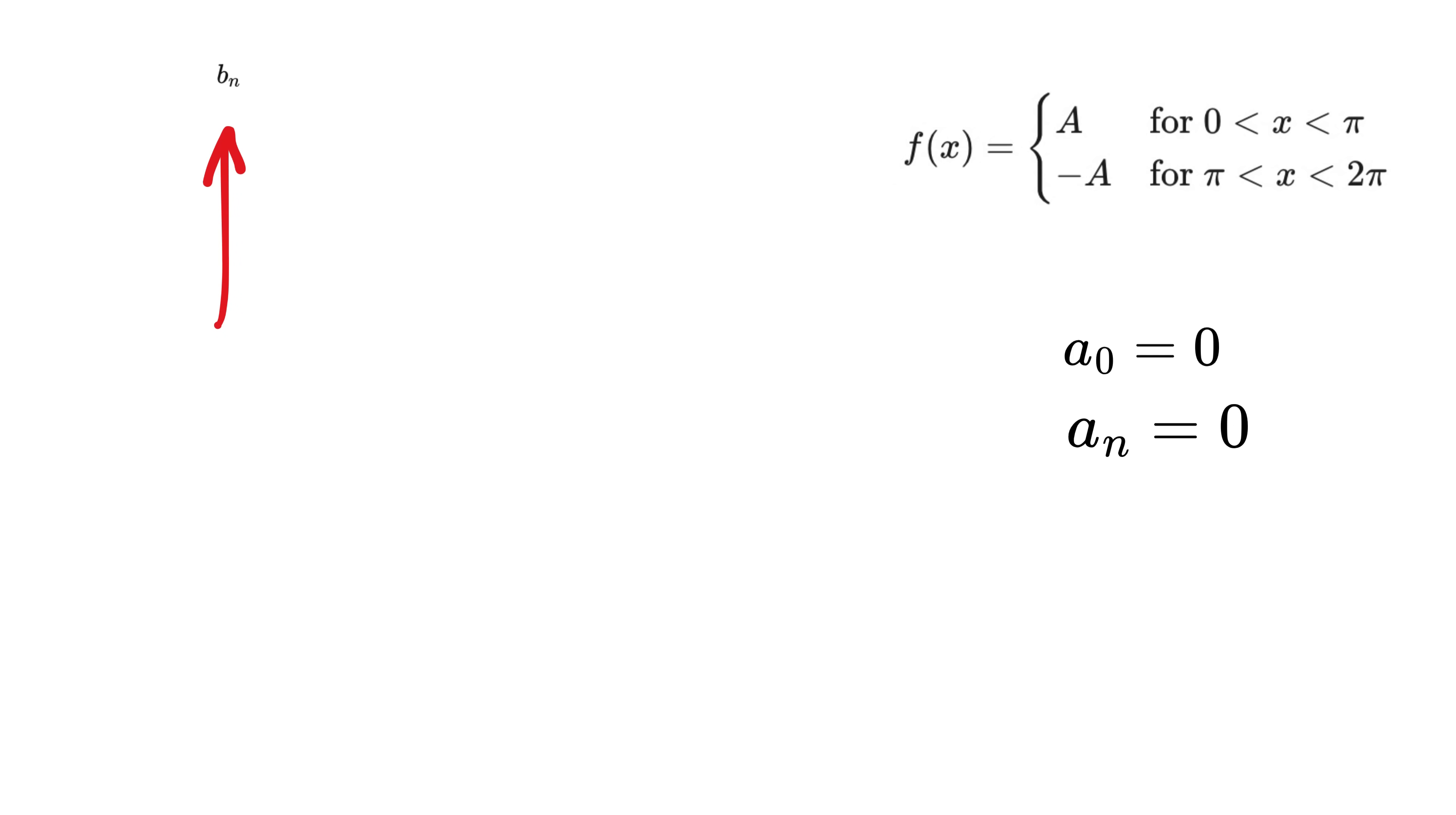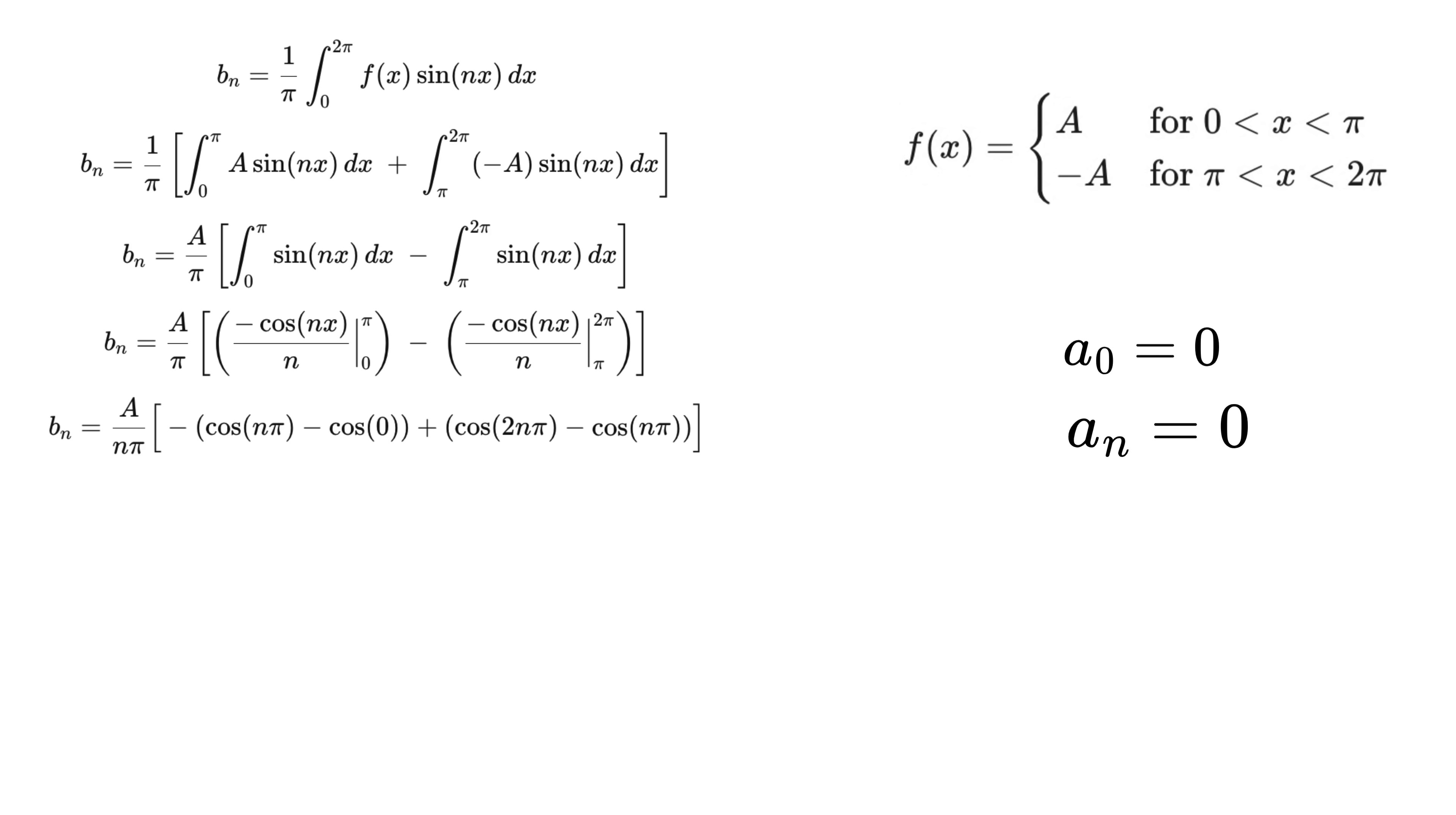Similarly, we can calculate bₙ for sine waves, which is given using this integral. You know the first step. Split the integral into these two intervals. The integral of sin(nx), with respect to x, is minus cos(nx), divided by n. So evaluating the first contribution gives A times this, and the second contribution gives minus A times this. On simplifying the signs and grouping the boundary terms, we get A over nπ, times the bracket containing minus cos(nπ), minus of minus cos(0), plus cos(2π) minus cos(nπ). We know that cos(0) is 1, and cos(2π) is 1, while cos(nπ) equals minus 1 to the power n. So after substitution, we get this, which then becomes 2 times 1 minus of minus 1 to the power n.